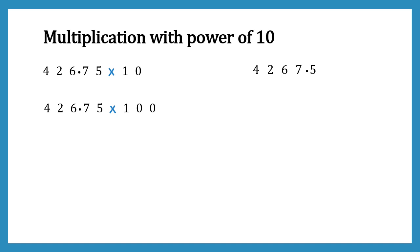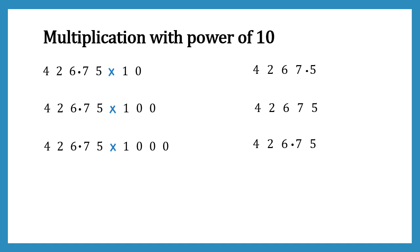Now let's multiply the same number by 100. Since 100 contains two zeros, we are multiplying by 10's power 2, so we shift the decimal point two places to the right. Because there are no digits remaining to the right of the decimal, we can remove the decimal point. Next, multiplying by 1000 means 10's power 3 — we shift three places. Since we only have two digits after the decimal, we add a zero for padding and then shift, again removing the decimal point.